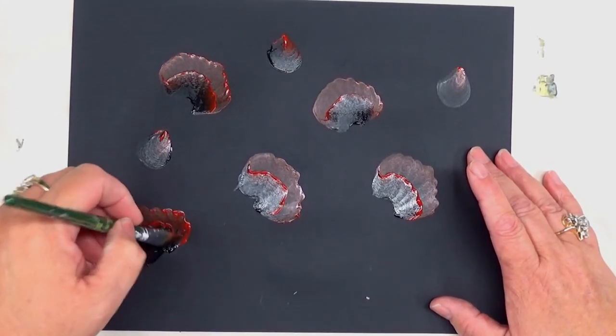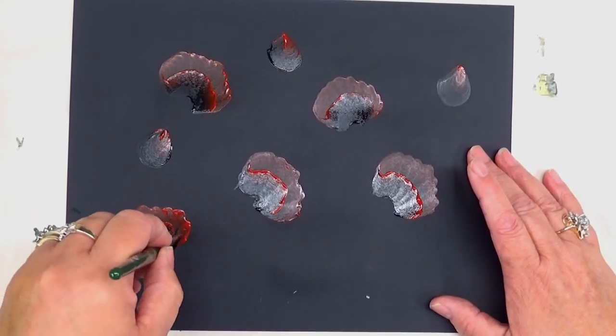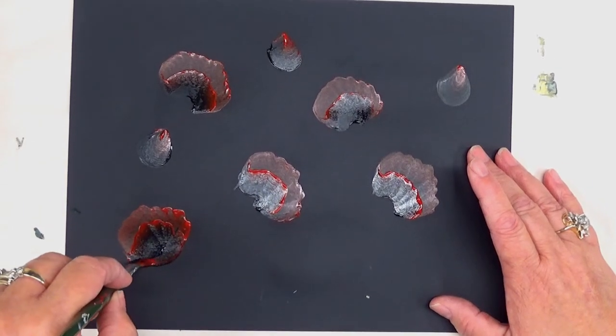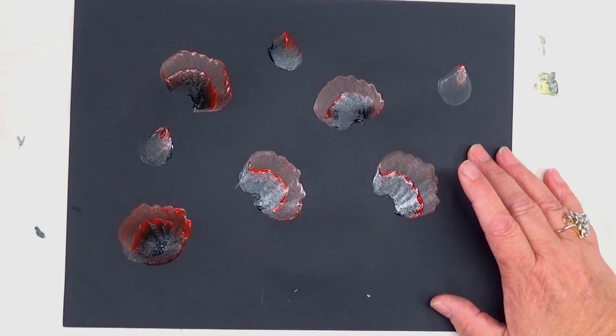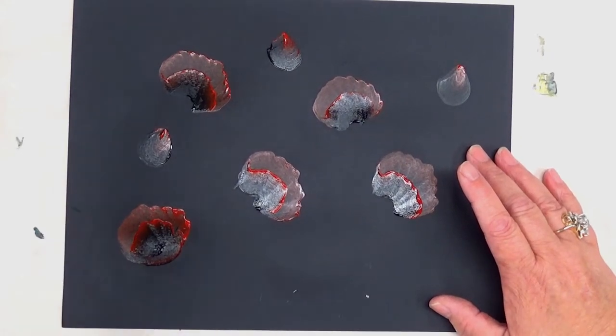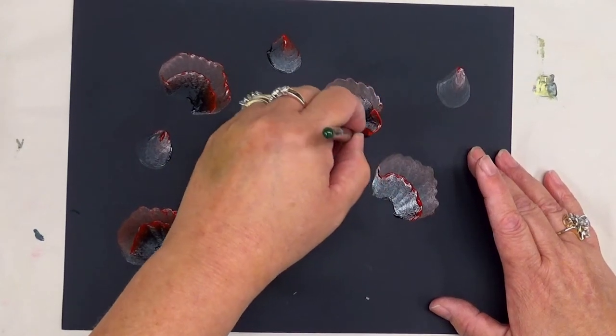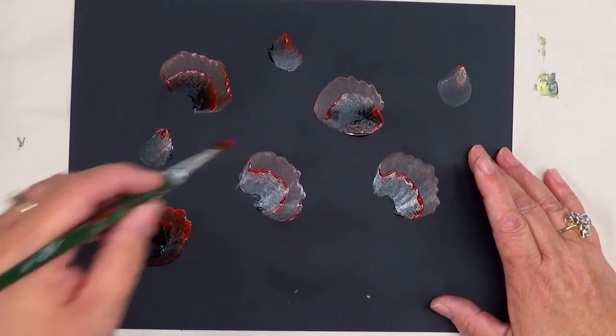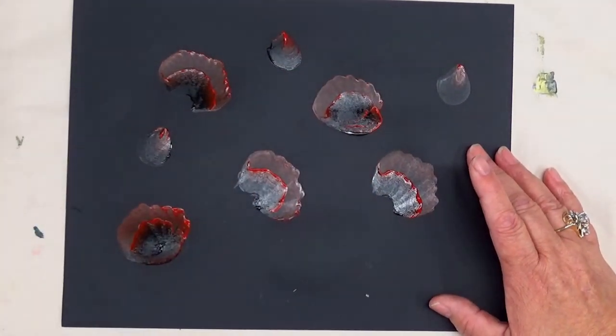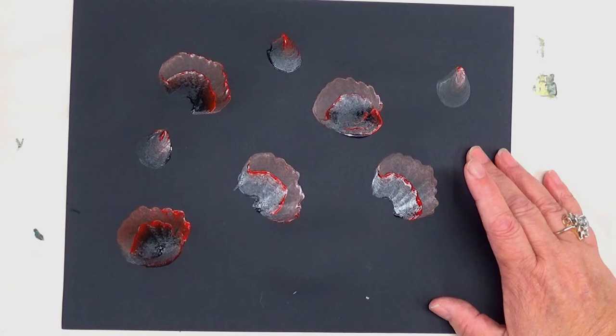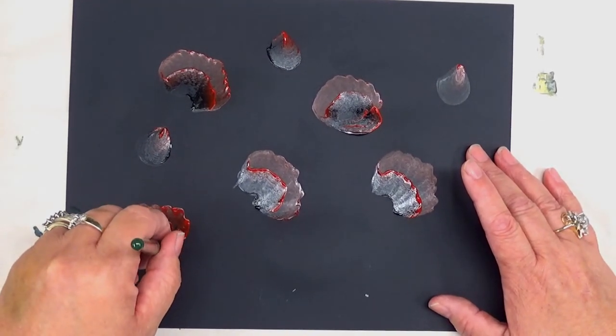If you want, you can come back in and add some interest by bringing it back over here to kind of fill this in and connect it, or you can just leave it be. It's really up to you. You can even put another stroke in here, kind of like we do with roses, just to fill that area. I think this is going to be really pretty on a glass.